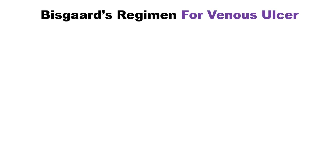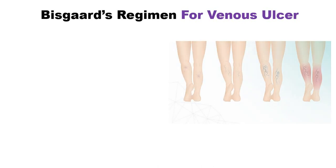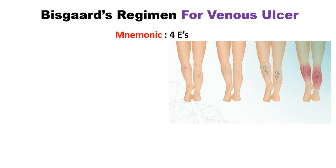In this video we will discuss the PISCARD regime for the venous ulcer. First of all, we will discuss the mnemonic to make this topic easy. The mnemonic is 'four E's', so you have to remember the four E's for the PISCARD regime.